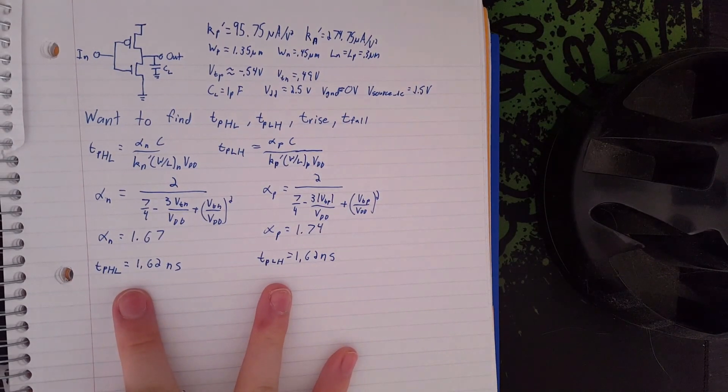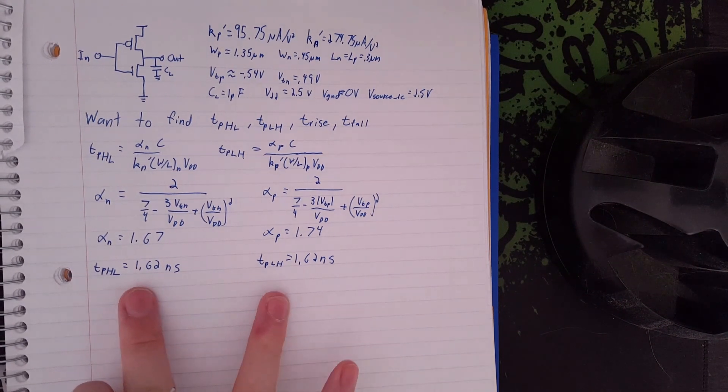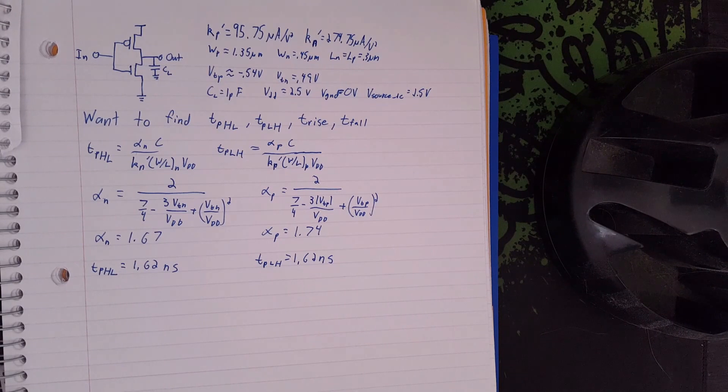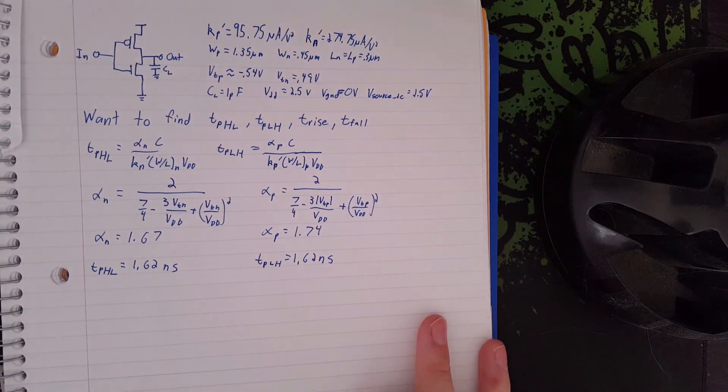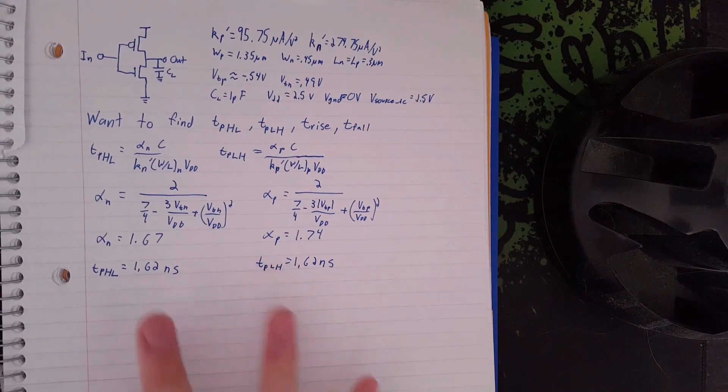As you can see, our two delay times for high to low and low to high are equivalent to the third significant figure. They're off a little bit after that, but they're close enough that we can say that these are matched pairs.